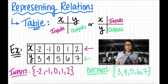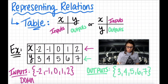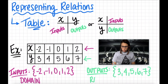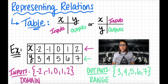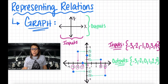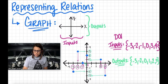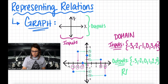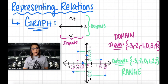The same can be said for our example representing a table. The domain was negative 2, negative 1, 0, 1, and 2, and the range was 3, 4, 5, 6, and 7 — we already did all of that work. For our graph, the domain were the inputs: negative 3, negative 2, negative 1, 0, 3, and 4. And the range were the outputs: negative 3, negative 2, 0, 1, 2, and 3.